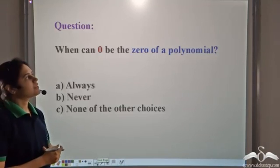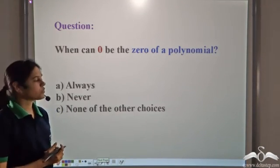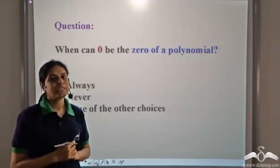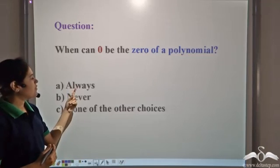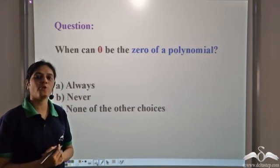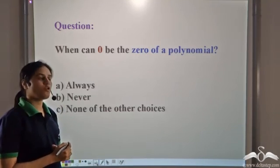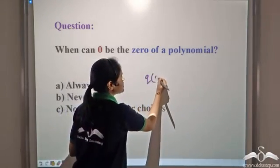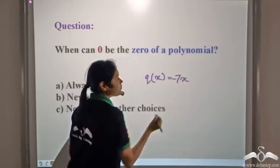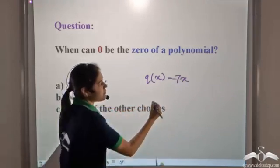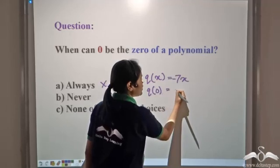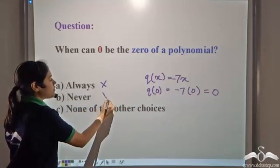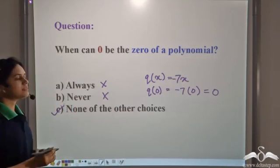When can zero be the zero of a polynomial — always, never, or neither? 'Always' is incorrect because other numbers can also be zeros of polynomials. 'Never' is also incorrect because, as we saw with Q(x) = -7x, substituting x = 0 gives -7 × 0 = 0, so zero is the zero of that polynomial. The correct answer is neither — zero can sometimes be the zero of a polynomial.